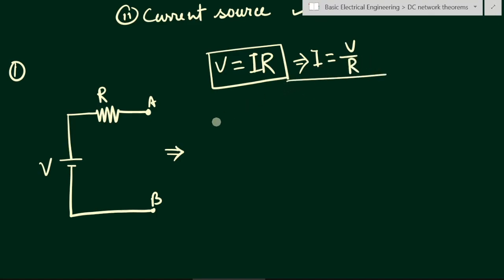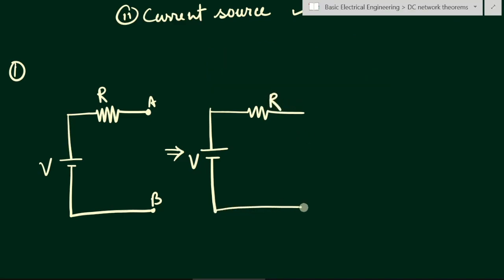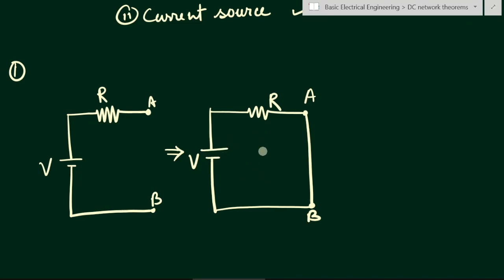We will use this property here. We have an open circuit with points A and B. Now we short circuit these two points A and B. This is the voltage source V with series resistance R, and here we have points A and B short-circuited, forming a closed loop. Current will now flow, and we find the current flowing in this circuit will be equal to V/R.